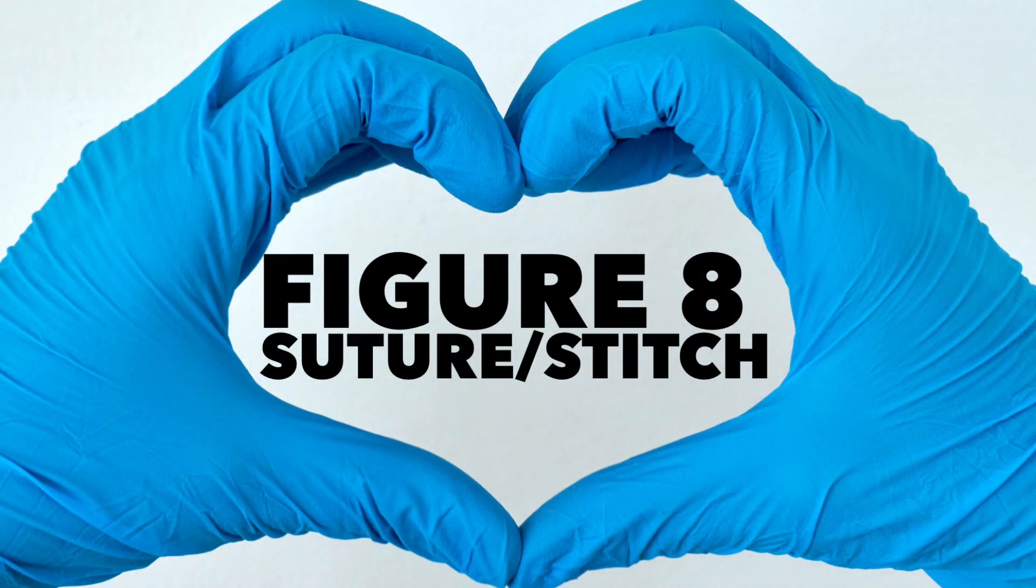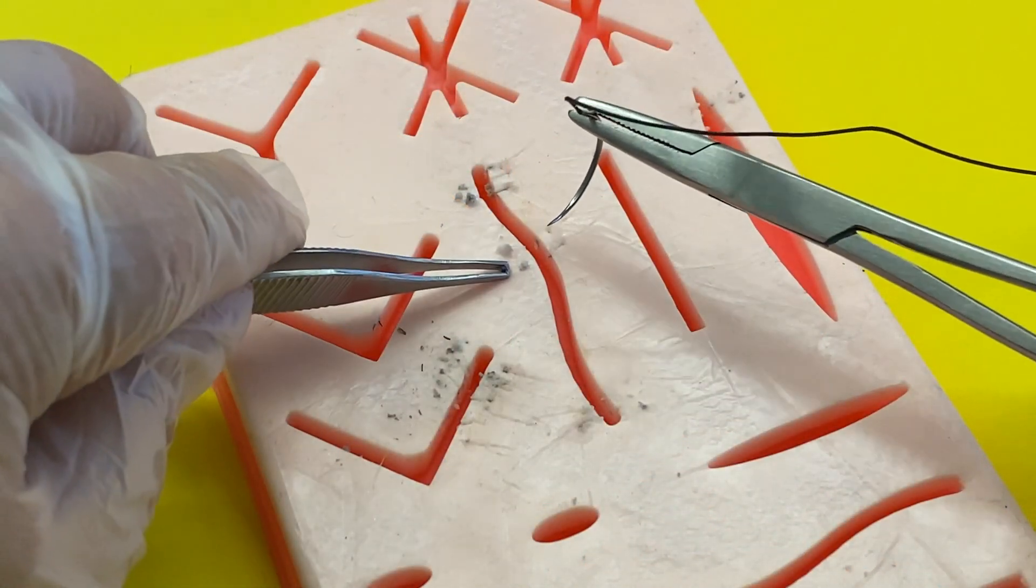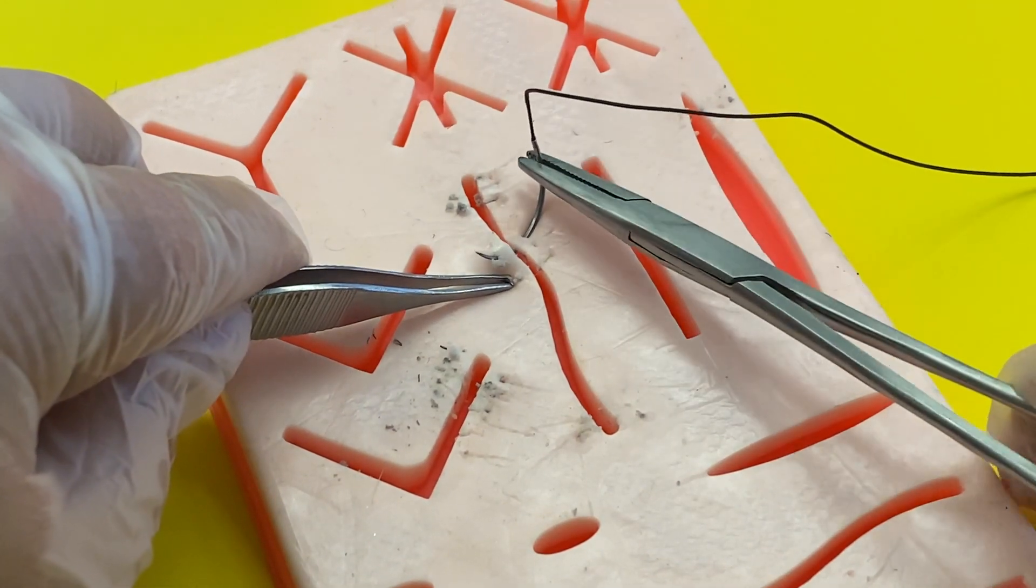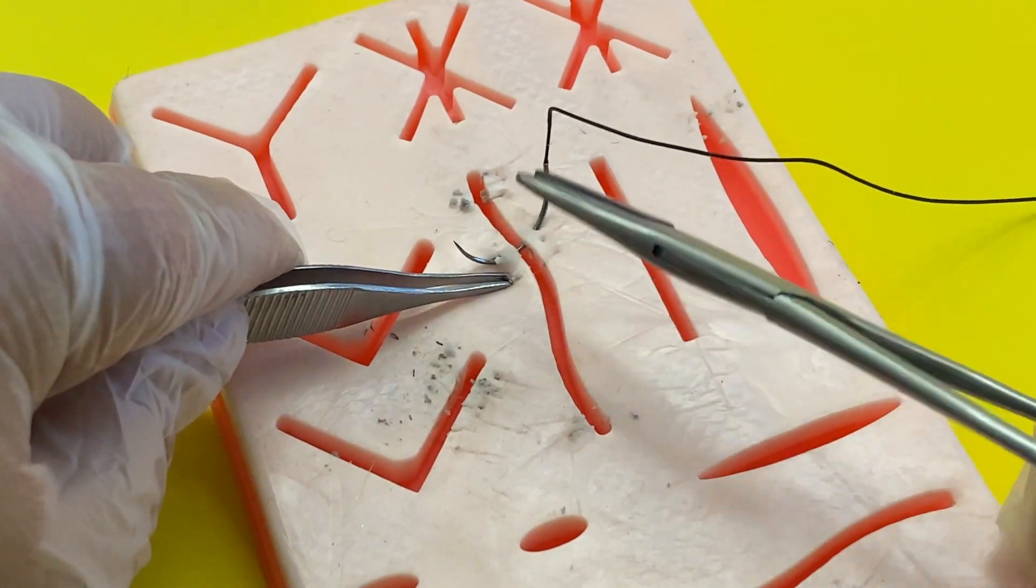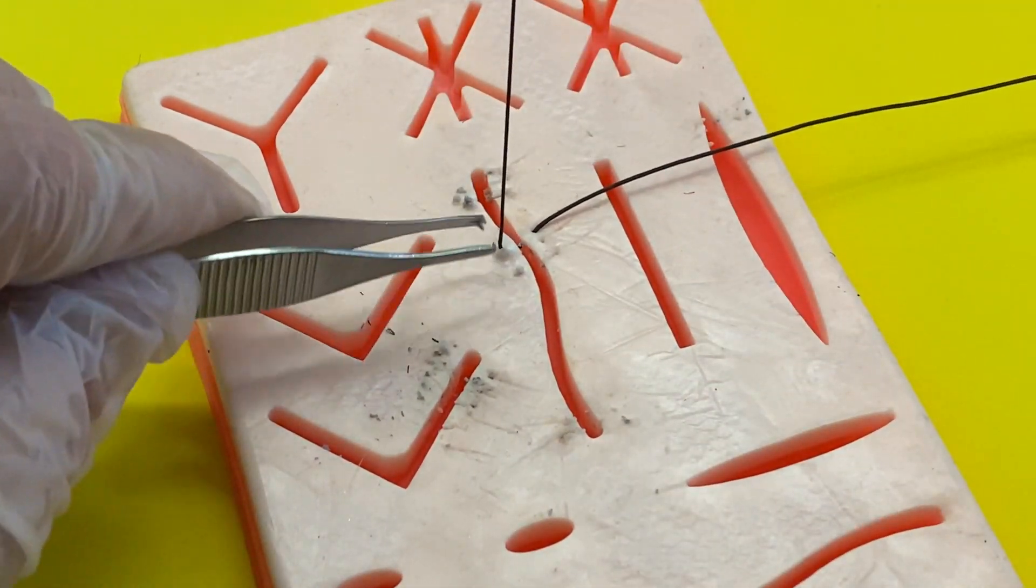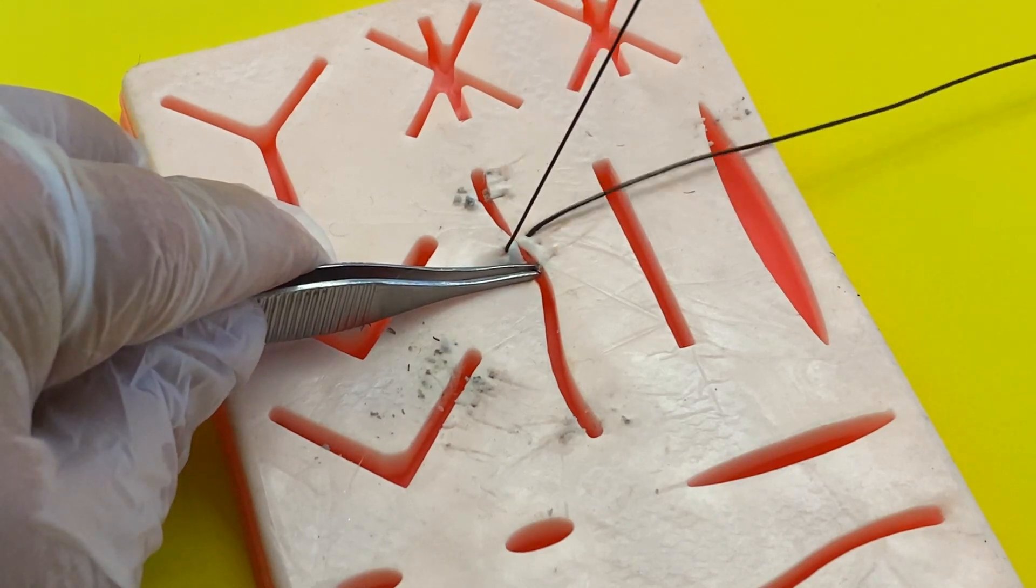Now we are ready to try another stitch called the figure eight. So we're going to pick a different wound on the suture pad. The beginning is the same with the needle driver and the tweezers. Go ahead and pull that needle through and pull the thread to the end, leaving a little bit left over.